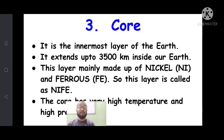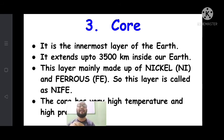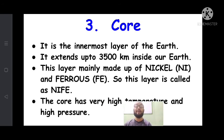The third and last layer is the core — the innermost layer of the earth. It extends up to 3,500 kilometers inside the earth. This layer is mainly composed of nickel and ferrous (iron), so it is called Nife: 'Ni' from nickel and 'Fe' from ferrous. The core layer has very high temperature and very high pressure, making it a very dense layer that is basically in a liquid state.